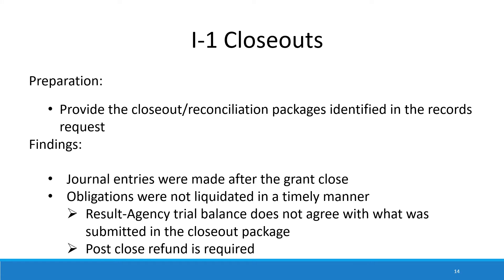Now we're going to go over each area that we review in detail, just to provide you with some tips on what we're looking for and how best to provide us the correct information. The first topic is closeouts. We ask that you send us the closeout and reconciliation packages for the grants identified on the records request. The records request will also ask you to send a current trial balance for each one of the funds identified.